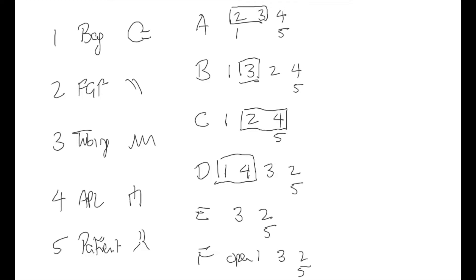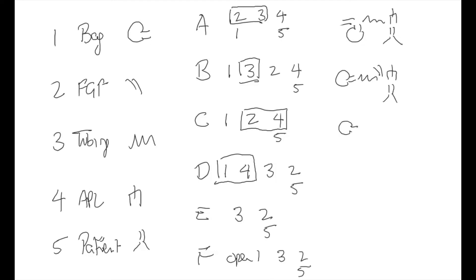Now, if we reinsert the symbols in, we get the bag, the fresh gas flow, tubing, APL valve, and then the patient for Mapleson A. B is the bag, the tubing, fresh gas flow, APL valve, and then the patient. C is the bag, fresh gas flow, APL valve, and then the patient.